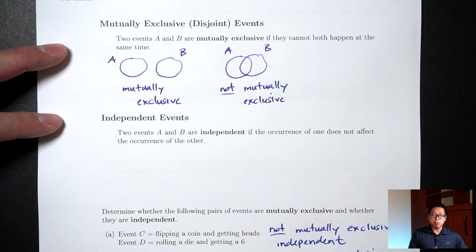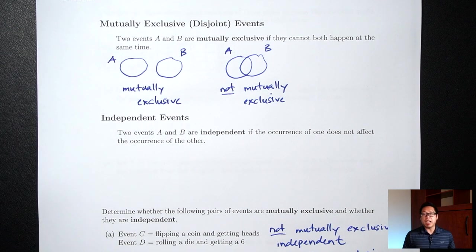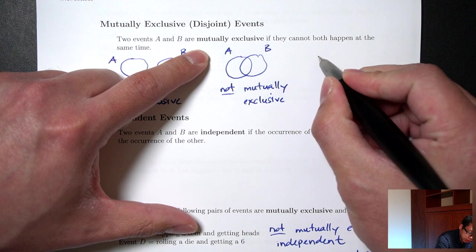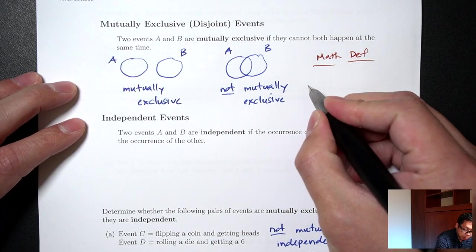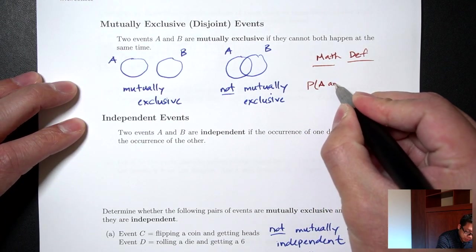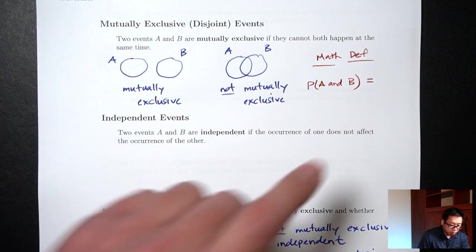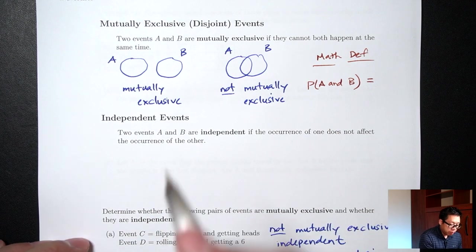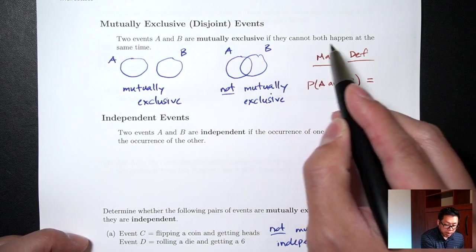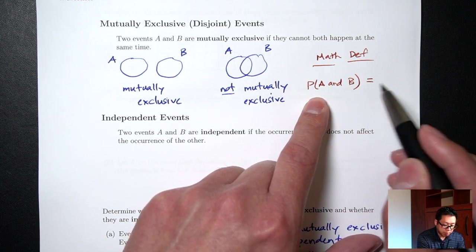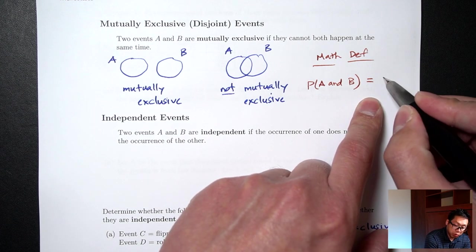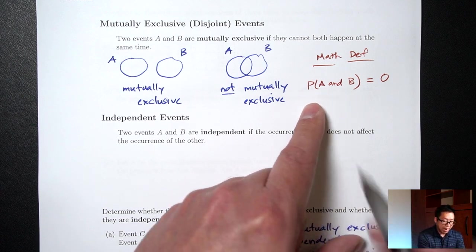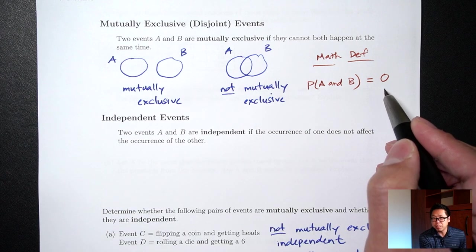So we just talked about mutually exclusive and independent using words. Both of these ideas have a math definition we'll need later. For mutually exclusive, the math definition involves the probability of A and B. Since 'and' means A and B at the same time, if mutually exclusive means they cannot both happen at the same time, then the probability of A and B equals zero — meaning it's never going to happen.